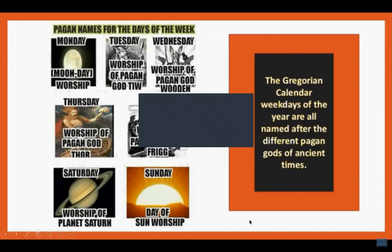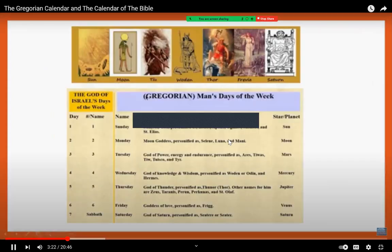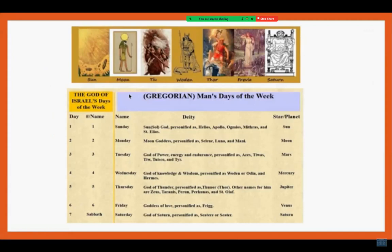The Gregorian calendar weekdays are also all named after different pagan gods of ancient times. The months are named after planets and false gods, and so are the weekdays. We have Moon Day — that's Monday. Tuesday is Tiu. Wednesday is Woden's Day. Thursday is Thor's Day. Friday is Frigg's Day. Saturday is Saturn worship. And Sunday is sun worship. A chart shows the days of the week with their numbers as found in scripture — notice they are all numbered.